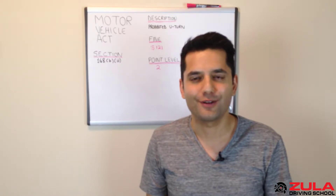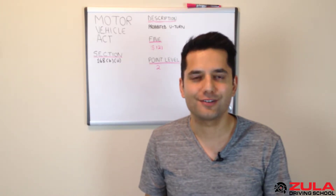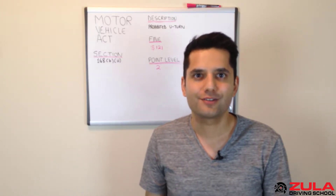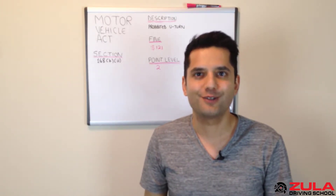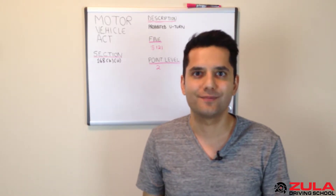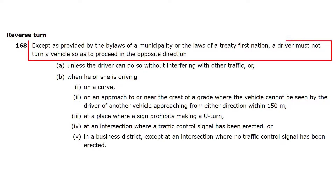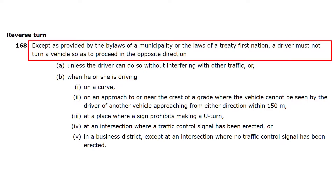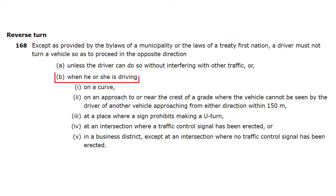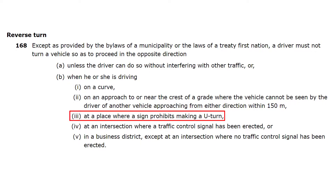Hi, my name is Shayan and I'm one of the driving instructors here at Zula Driving School. Let's take a look at what the Motor Vehicle Act states. It reads: except as provided by the bylaws of a municipality or the laws of a treaty first nation, the driver must not turn a vehicle so as to proceed in the opposite direction when he or she is driving at a place where a sign prohibits a U-turn.